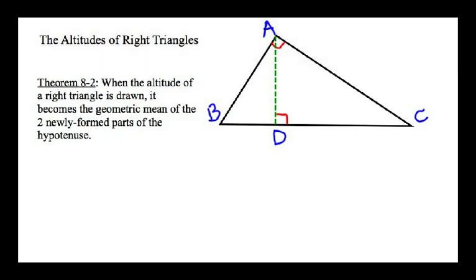Theorem 8-2, when the altitude of a right triangle is drawn, it becomes the geometric mean of the two newly formed parts of the hypotenuse. Alright, let's see what that means. This altitude, which we're going to call AD, is drawn from the right angle down to the hypotenuse, creating another right angle. So AD is the altitude.